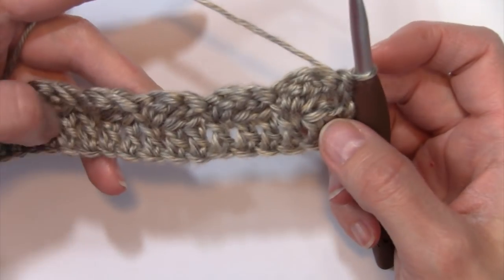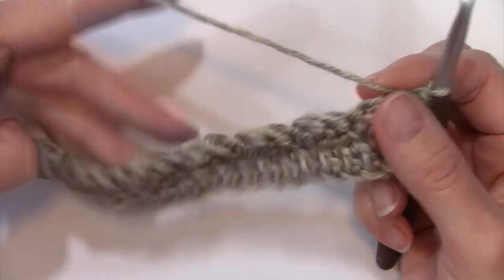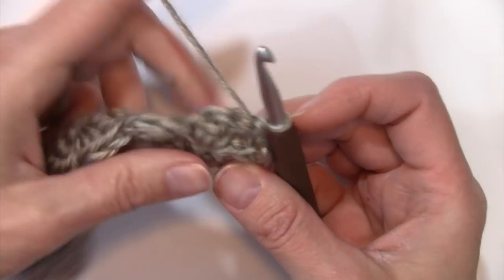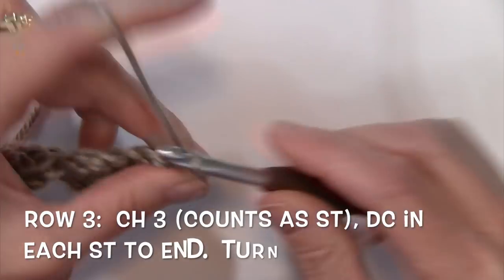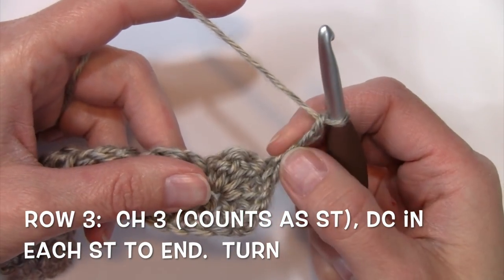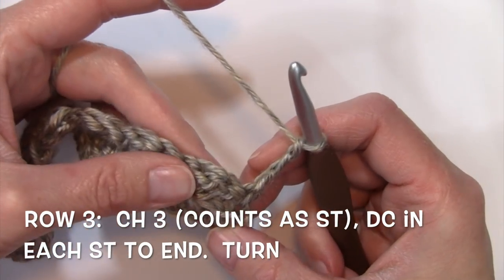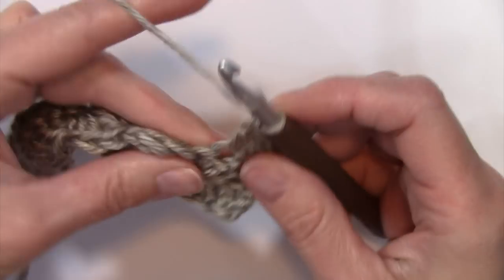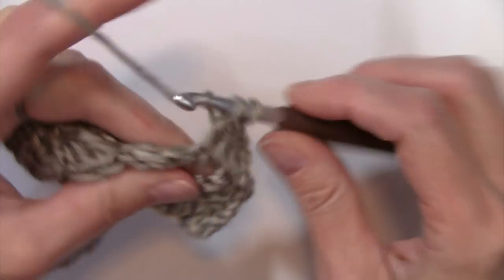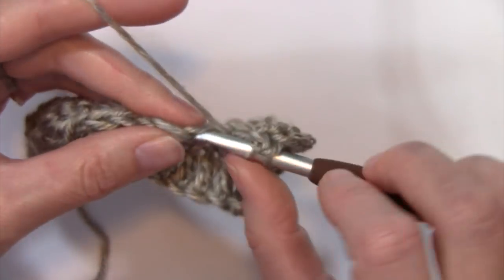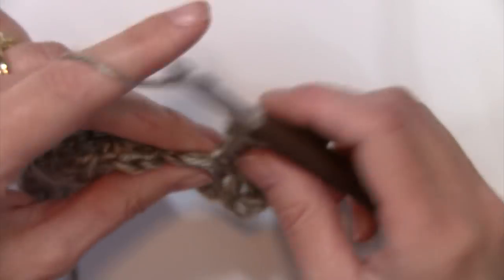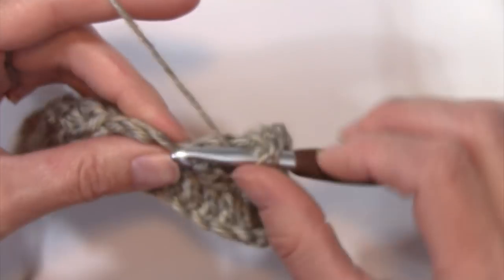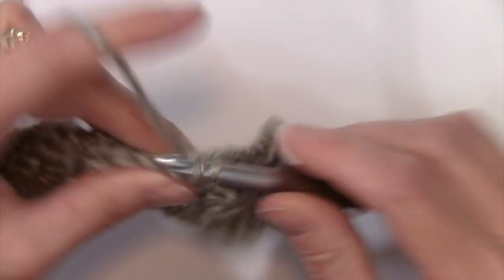We're going to turn our work, and we're going to work row three, which is a chain three. That chain three is going to count as a stitch as our first double crochet, and now I'm going to work a double crochet in each stitch of this row. So just work a double crochet in every stitch.